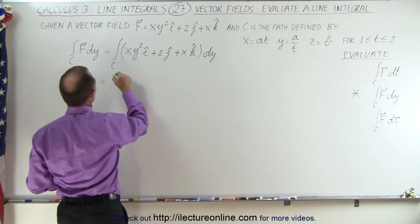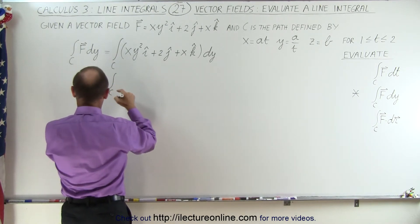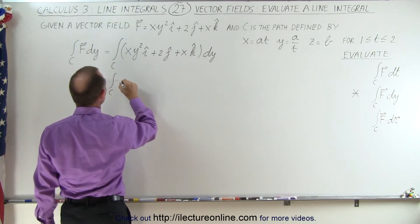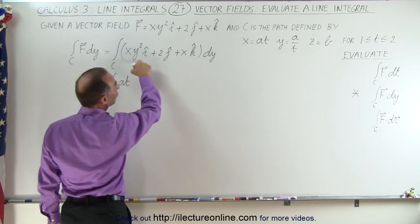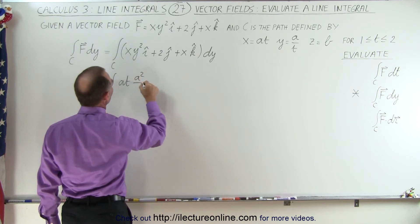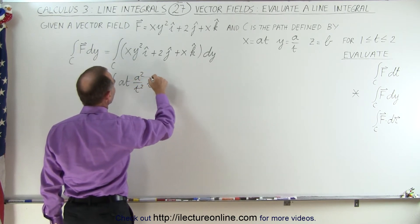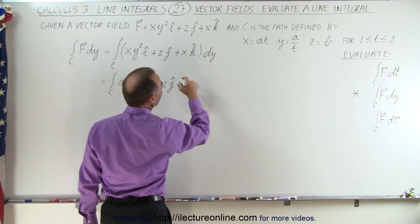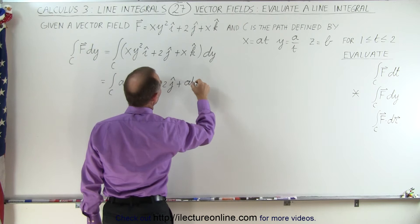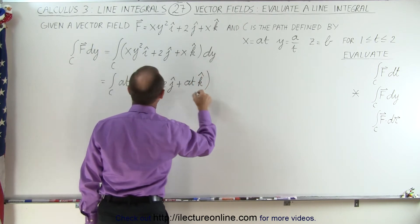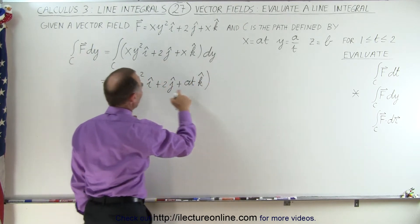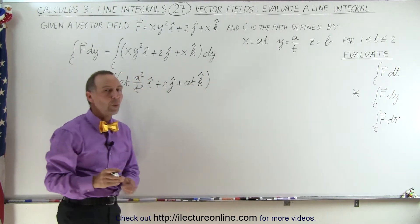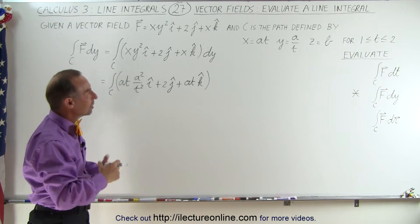This becomes equal to the integral. Instead of x we have a times t; instead of y squared we end up with a squared divided by t squared in the i direction, plus 2 in the j direction, plus x which is a times t in the k direction. Now, since we have the variable t in here, we can't have a differential dy — we have to change that to dt somehow.